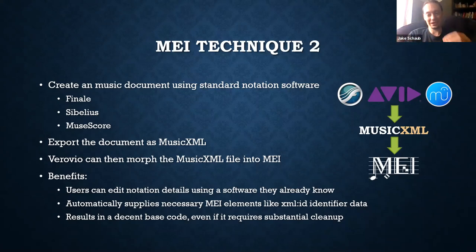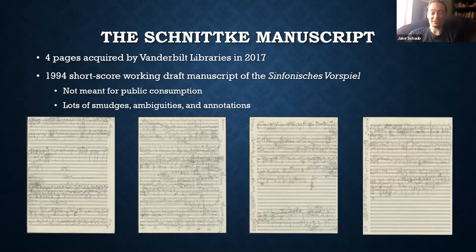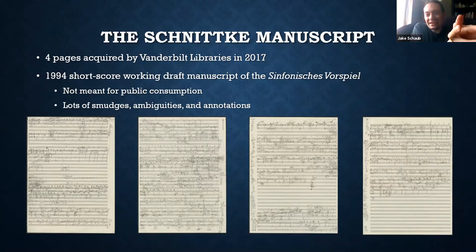Around spring break we thought we were ready to try the Schnittke — a learning moment for everyone, instructors and students alike. The document is four pages, acquired a few years ago. It is a short score, meaning that for an orchestral piece lasting about 20 minutes, the parts are condensed onto a limited number of staves rather than each instrument getting its own line.